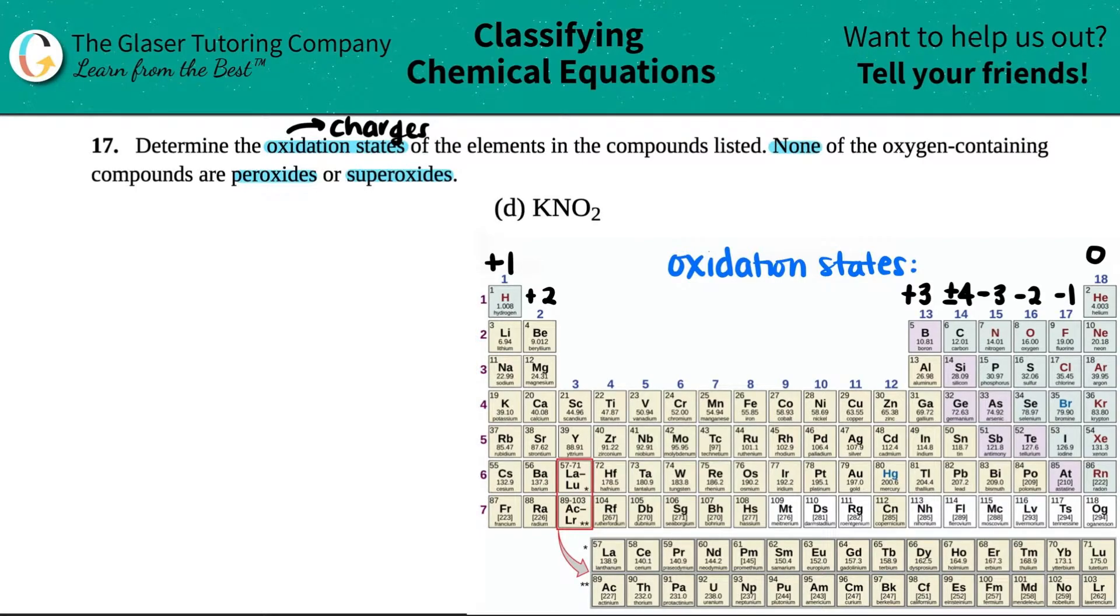The best thing to do for oxidation states is to memorize your trend. The periodic table has tons of trends already built into it, so this is just one of the many trends that you have to memorize: your oxidation state trend. We talked about this a little bit in depth in question 16A, so if you want to check that number out on the playlist you can.